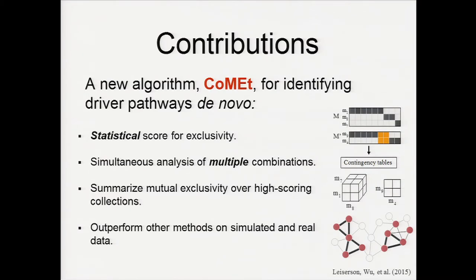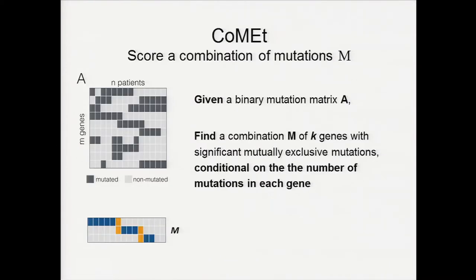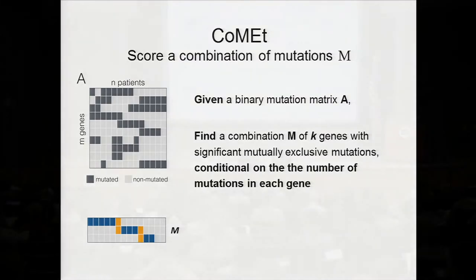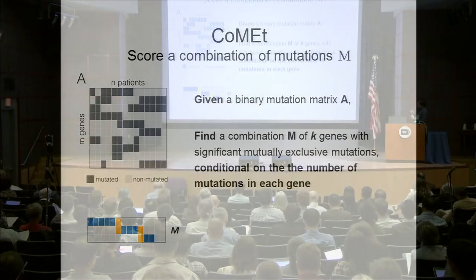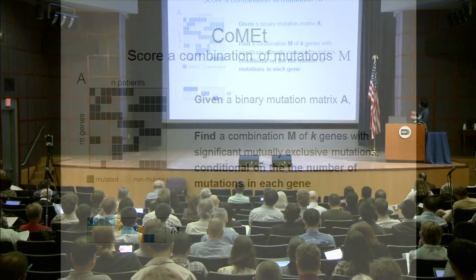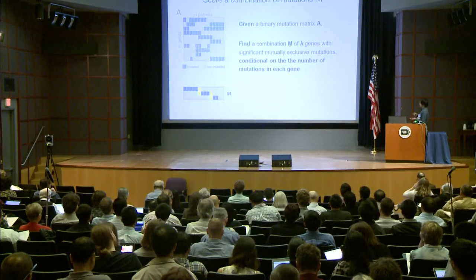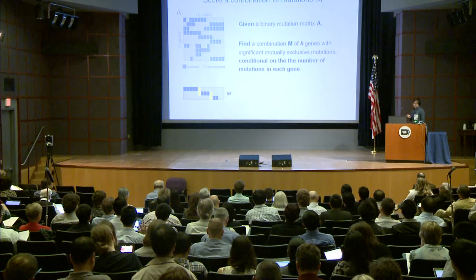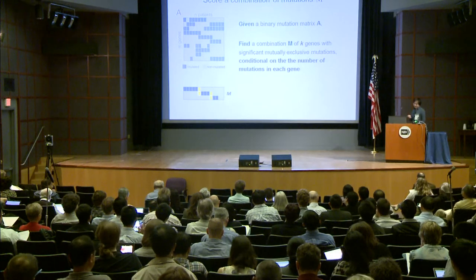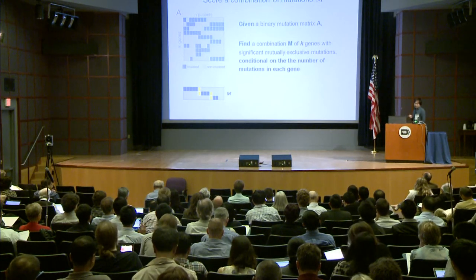In the following talk, I will give you an overview of our contributions. The first contribution is the new scoring function, and we can identify multiple combinations simultaneously. We define the problem for scoring one combination of mutation M as: given a binary mutation matrix A, find a combination M of K genes with significantly mutually exclusive mutations conditioned on the number of mutations in each gene.